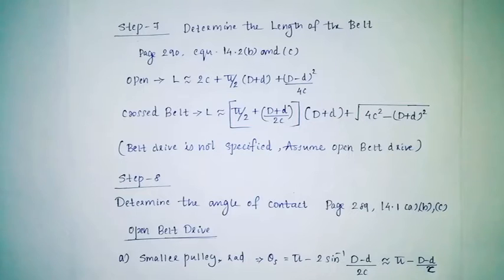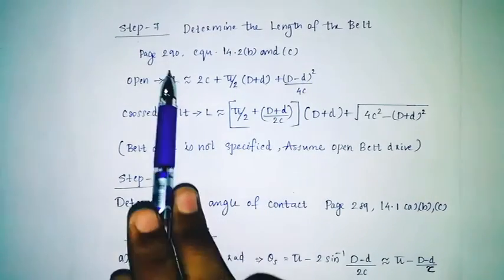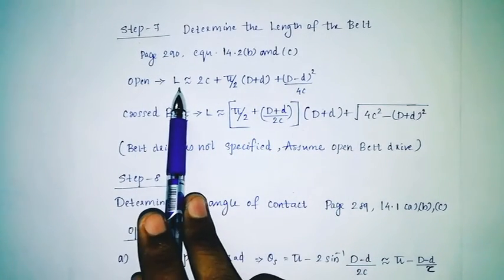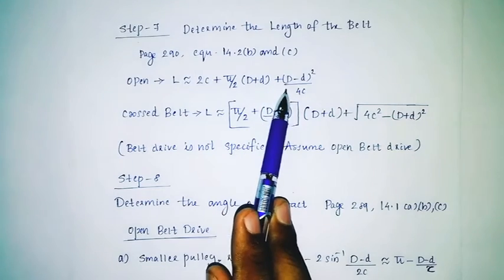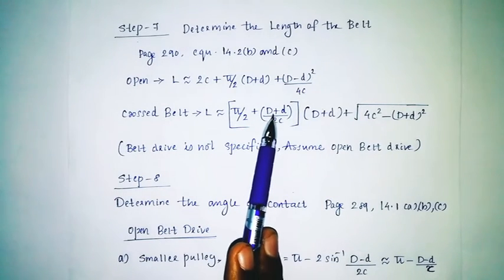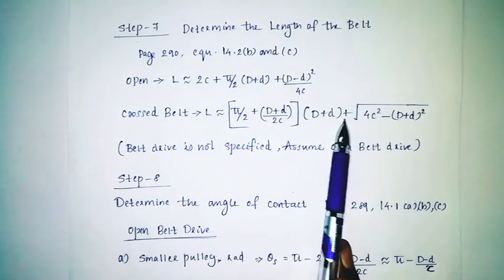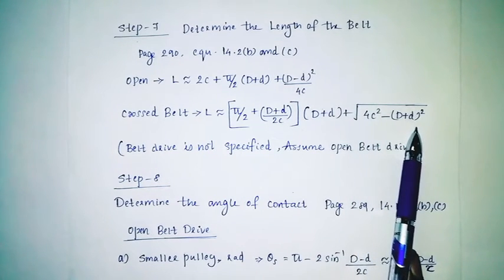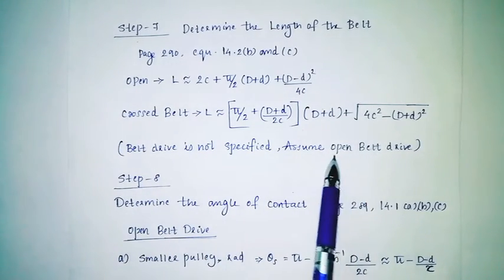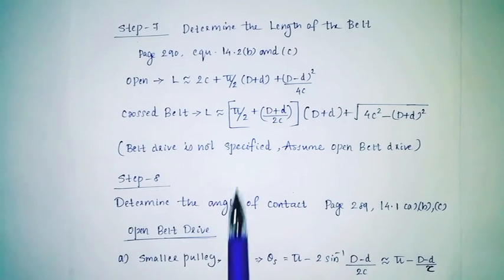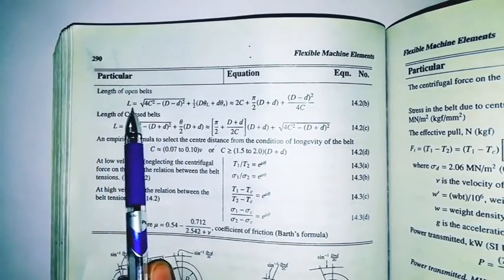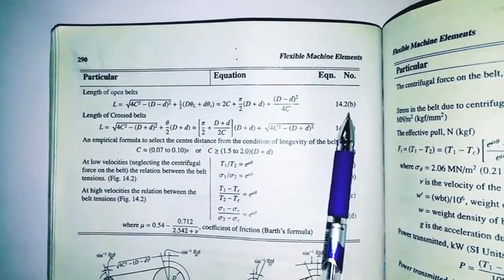Step 7: page number 29, equation 14.1bc. For open and cross belt: belt length equals the square root of 4c squared minus (D plus d) whole squared.